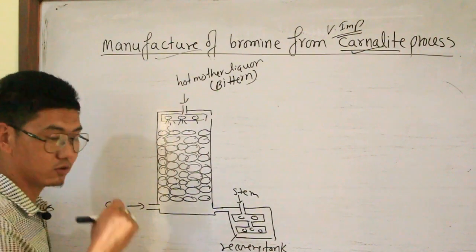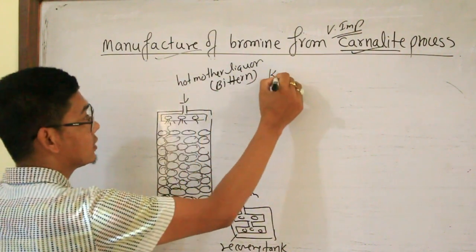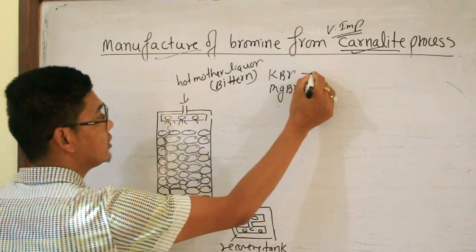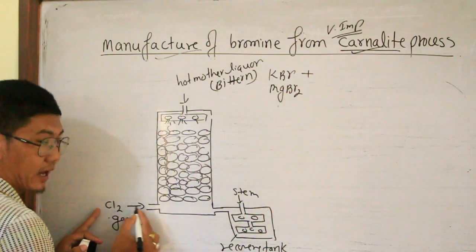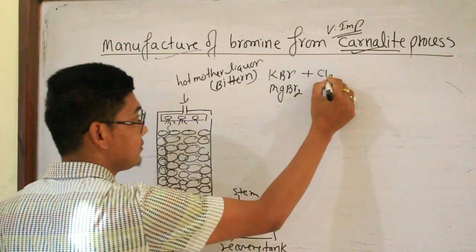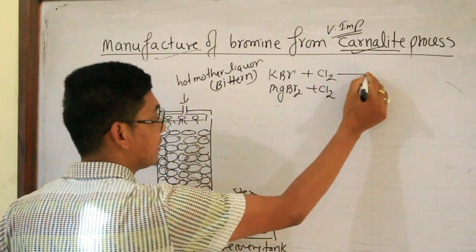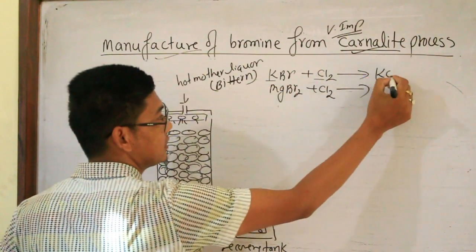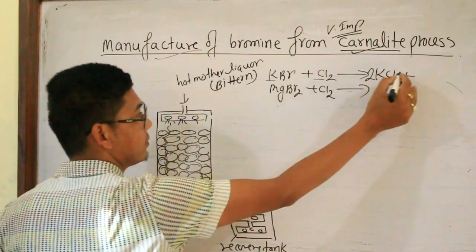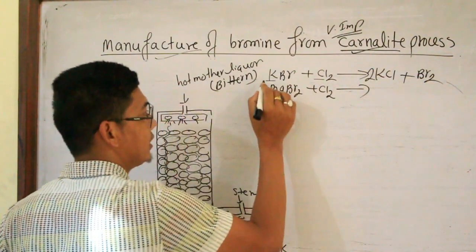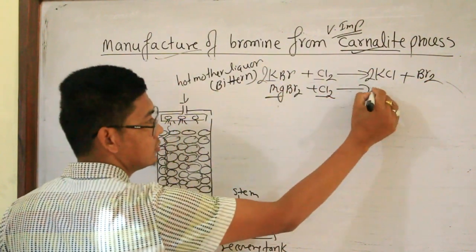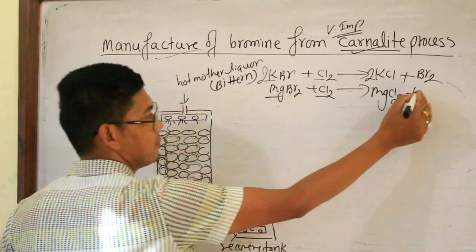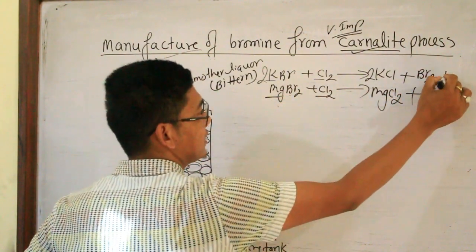KBr and MgBr₂ are soluble in the hot mother liquor. Chlorine gas displaces bromine: K⁺ + Cl₂ → KCl + Br₂, and Mg²⁺ + Cl₂ → MgCl₂ + Br₂. Bromine gas is released.